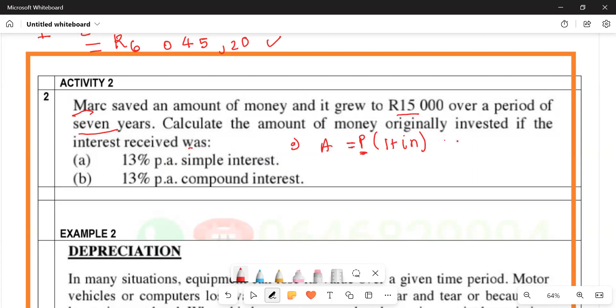Let's collect the data. What is our A, the accumulated amount? It's 15,000. What is our n? Seven years.